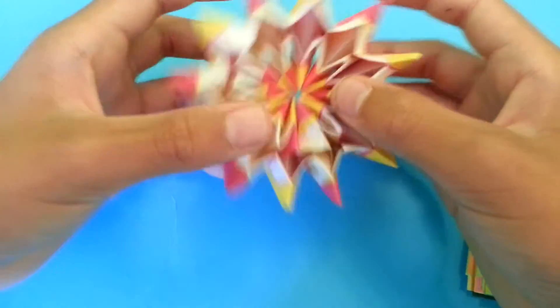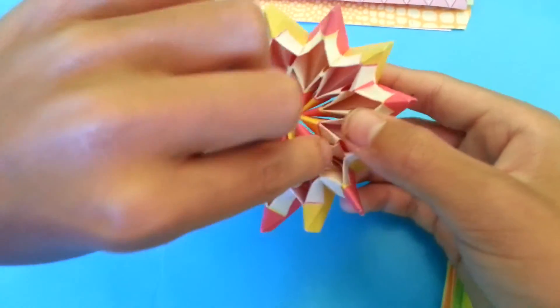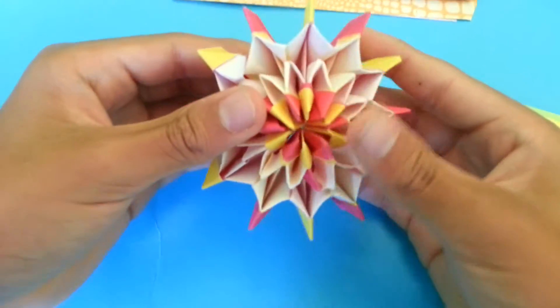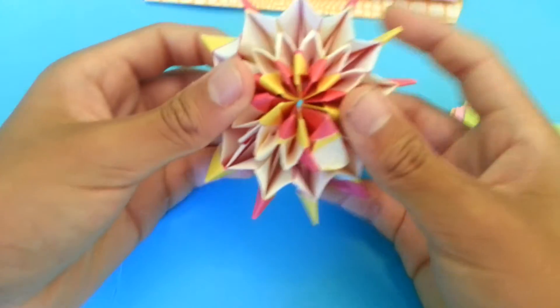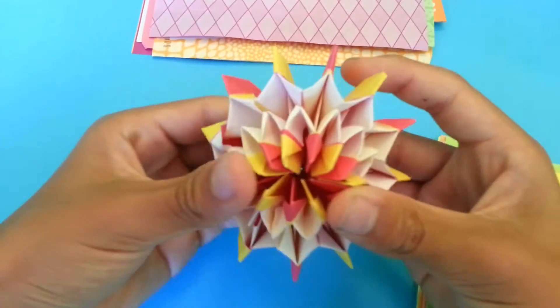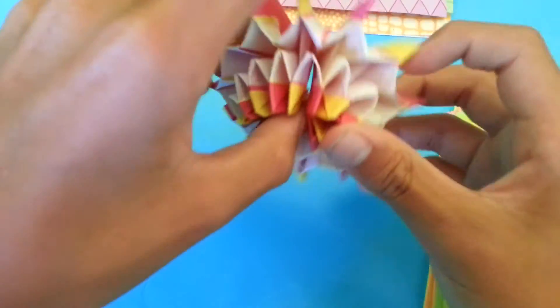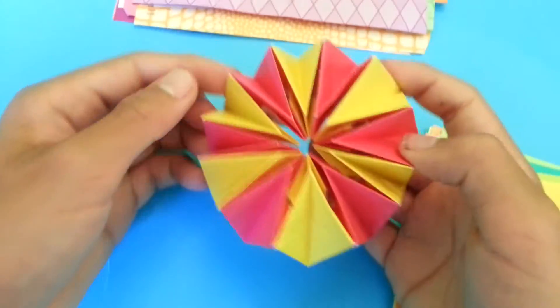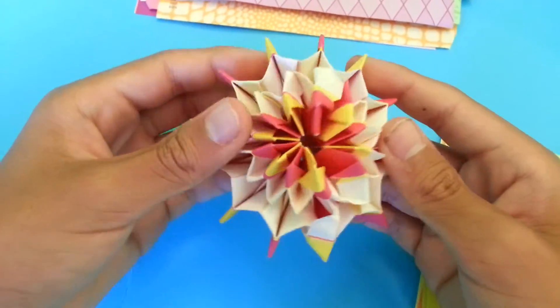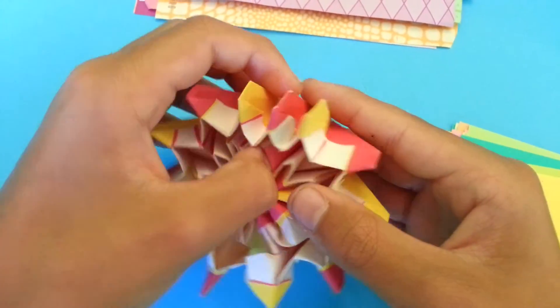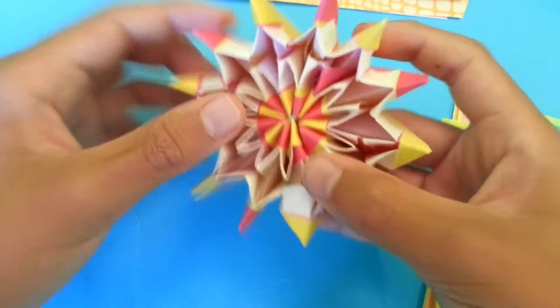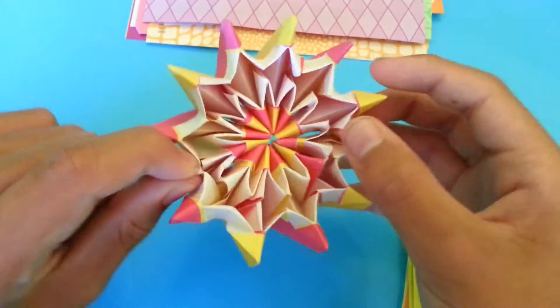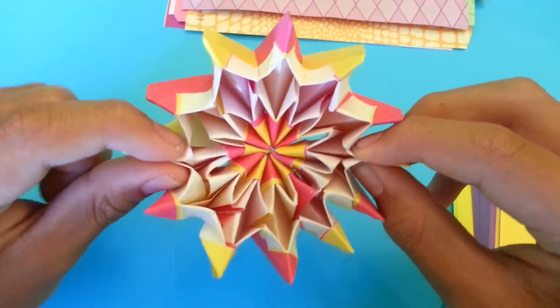So this is how it works. Make sure your flaps are in, and you're going to open it up like this. This is how it works. And it keeps going, so this is made out of about 12 sheets of paper.